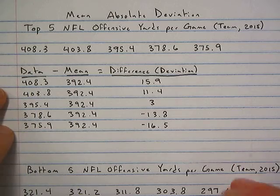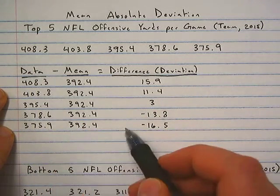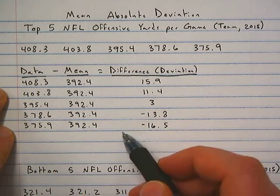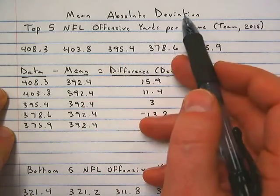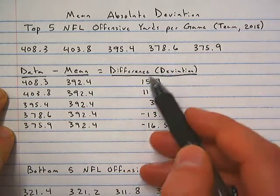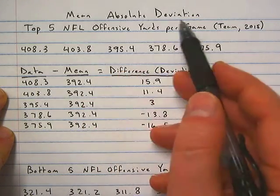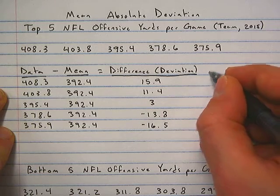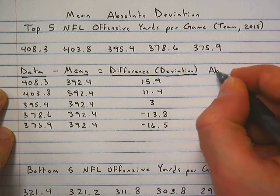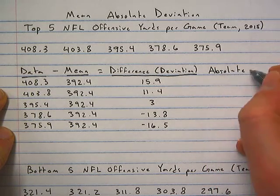The reason that some of them are negative and some are positive: the positive numbers are above the mean and the negative numbers are below the mean. Now in the name 'mean absolute deviation,' we have our deviation column. Next we need to find the absolute deviation — that's our next column: absolute value.